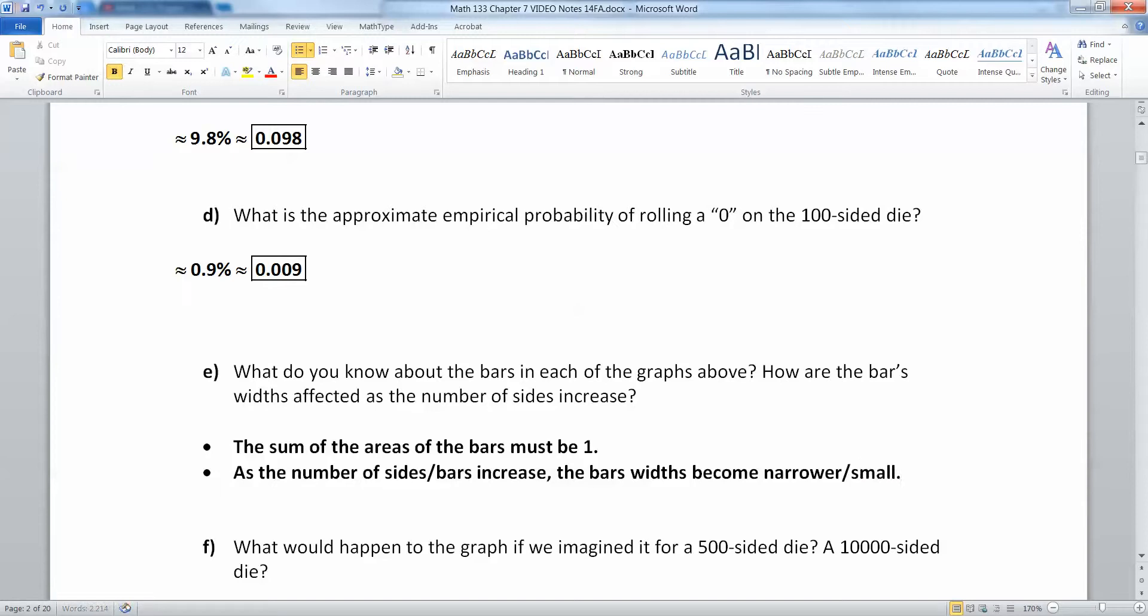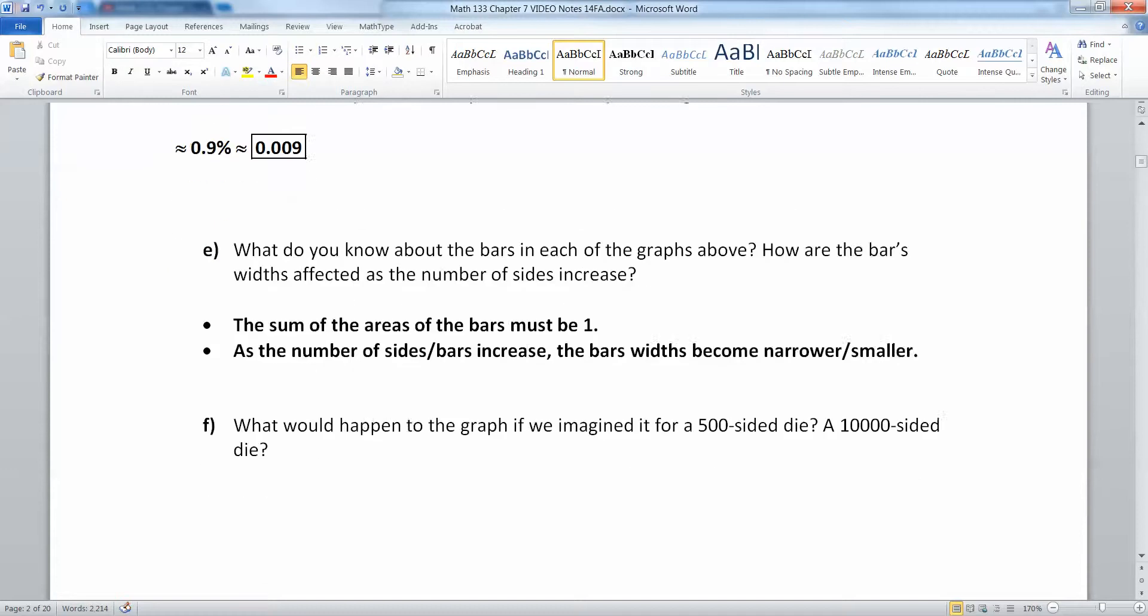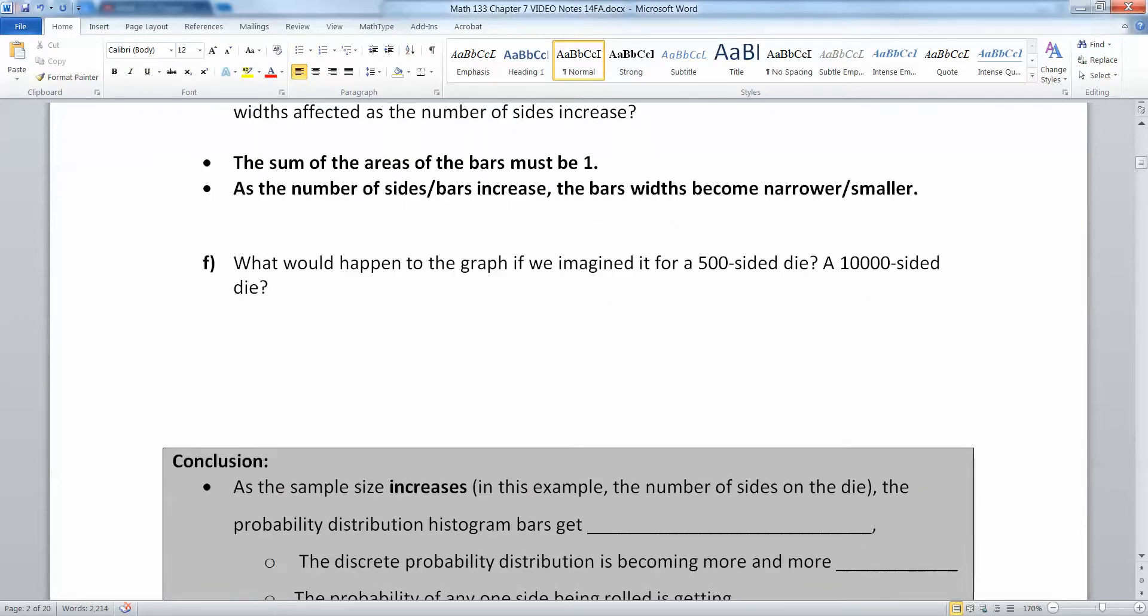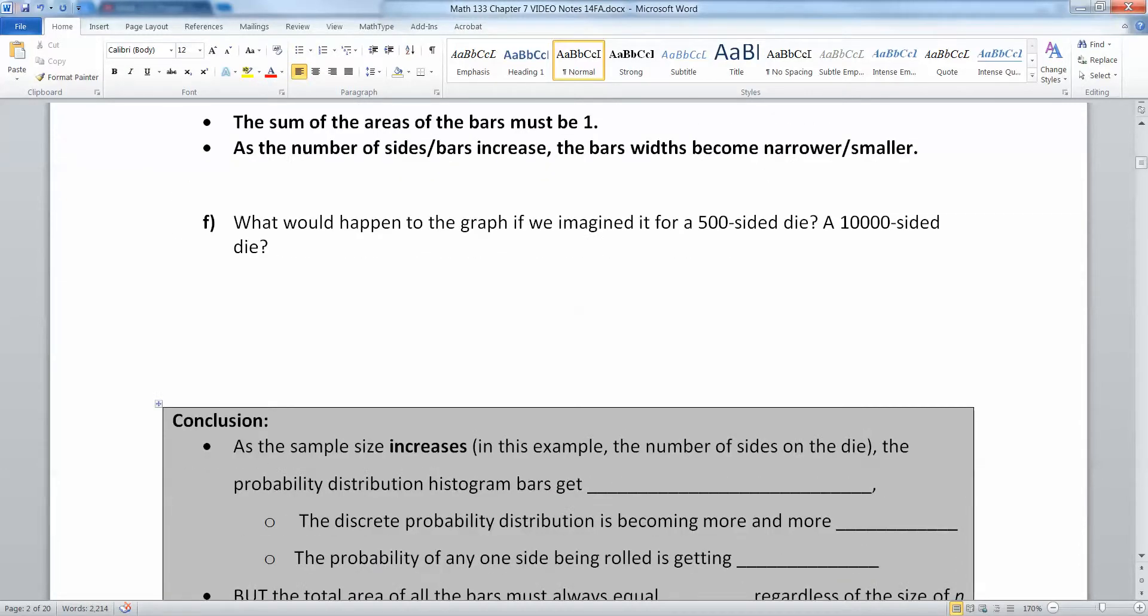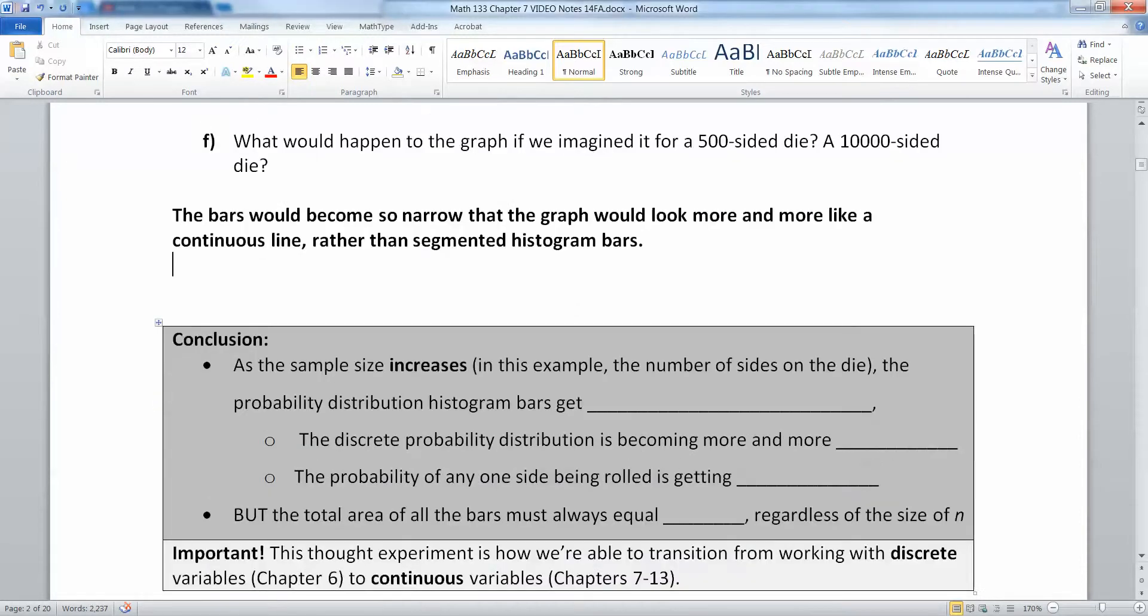What would happen to the graph if we imagined a 500-sided die, a 10,000-sided die? Well, the bars would get so narrow that it would basically start approximating a curve. The bars would become so narrow that the graph would look more and more like a continuous curve rather than segmented histogram bars.